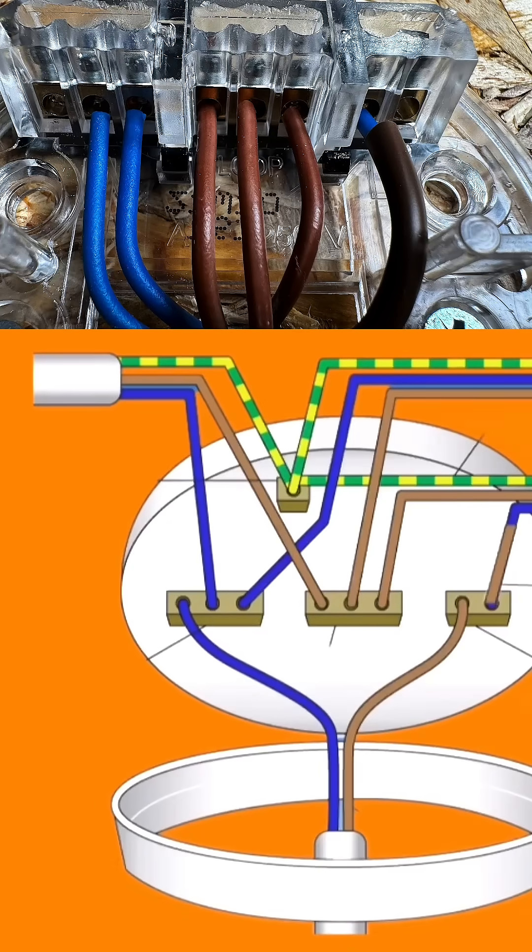Far left-hand side has a block of three, which is identified with an N, and that's for neutral, within the ceiling rose.